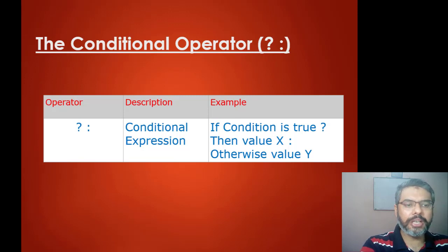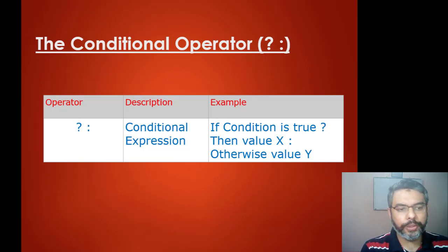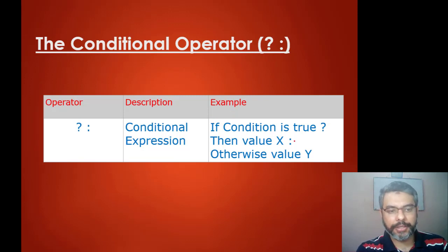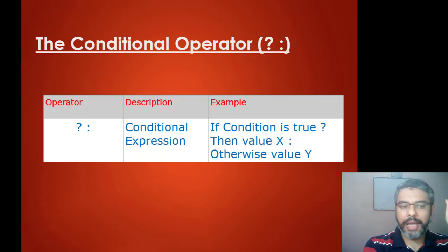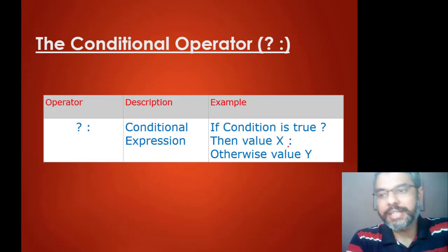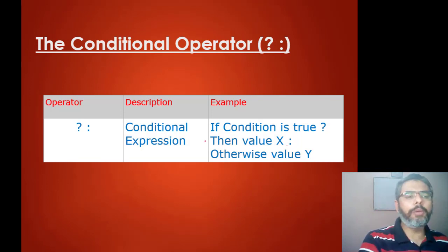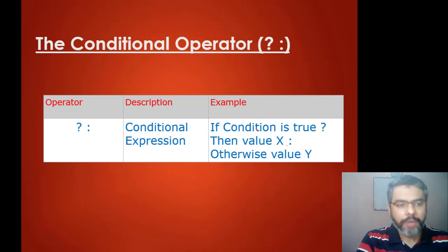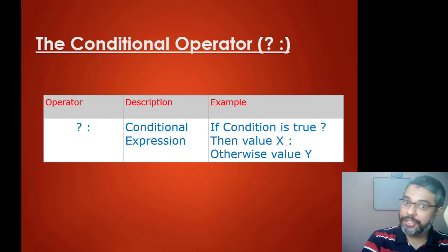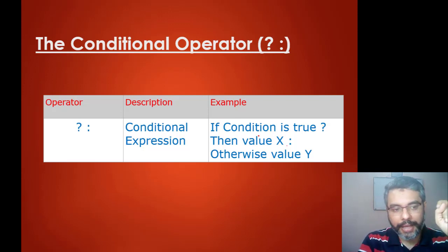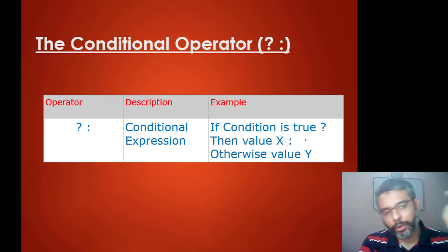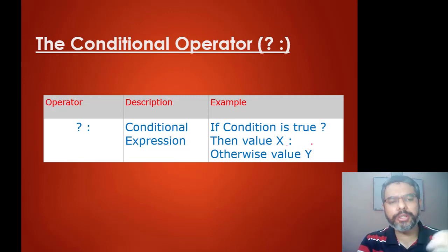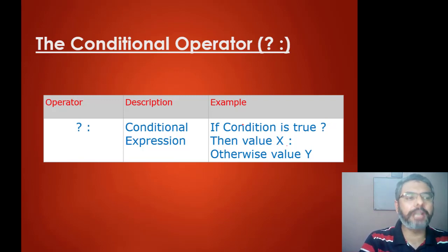The conditional operator, also called the ternary operator, is used to evaluate if a condition is true. The syntax is: condition, question mark, value x, colon, value y. If the condition is true, x is executed; otherwise y is executed — all in one line. This is similar to an if-else statement, and we will go into more detail when we cover if and else. These are the various different operators used in JavaScript.